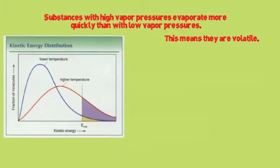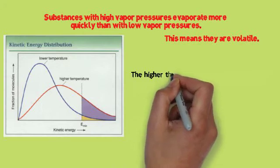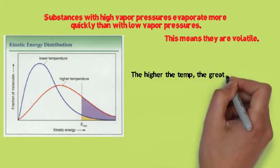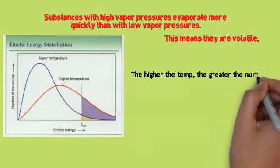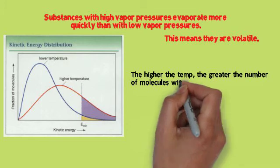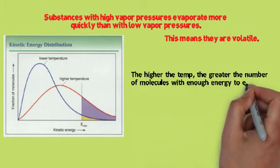This is a kinetic energy distribution graph. Meaning that obviously if you add more energy to it, the molecules can move more. They are faster moving. And some of them get enough energy to escape. So the higher the temp, the greater the number of molecules with enough energy to escape the liquid and become a gas.